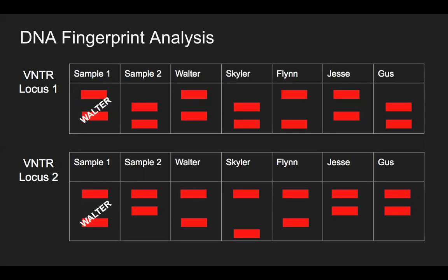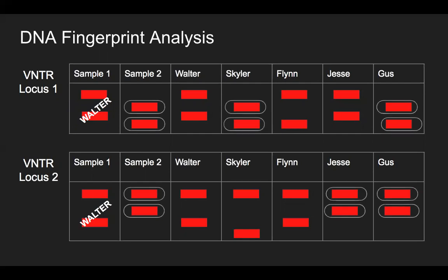To identify the killer, we will look at the second sample as it was found on the murder weapon. The first VNTR loci for sample two matches with both Skyler and Gus. The second loci matches with both Gus and Flynn. Since Gus was the only suspect that matched both alleles to sample two at both loci, we can conclude that he is guilty for the murder of Walter White.